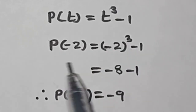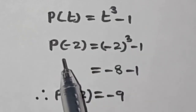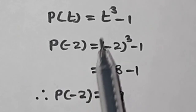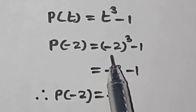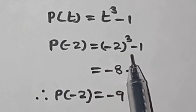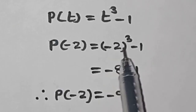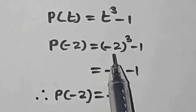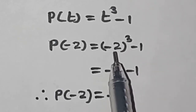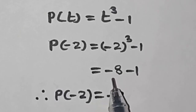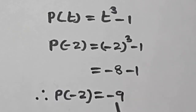Given P of t is equal to t cube minus 1, find the value of P of minus 2. Here t is equal to minus 2: minus 2 whole cube, minus 1. Minus 2 whole cube means minus 2 into minus 2 into minus 2, we will get minus 8. Minus 8 minus 1 is minus 9. Therefore, P of minus 2 is equal to minus 9.